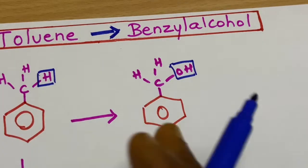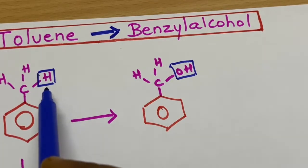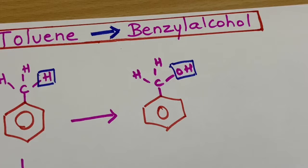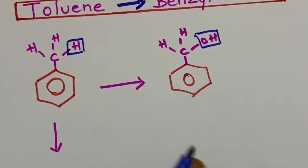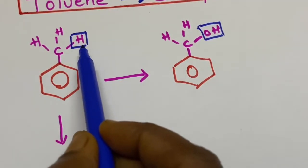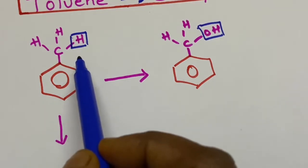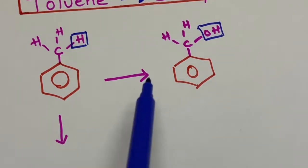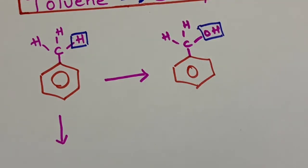But we do not have any reagent to convert the hydrogen directly into the hydroxyl group. Then what we can do? First we have to replace this hydrogen with a halogen. Then we can convert the halogen to the hydroxyl group. That is the easiest way.